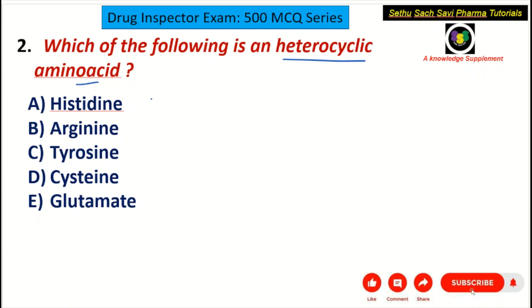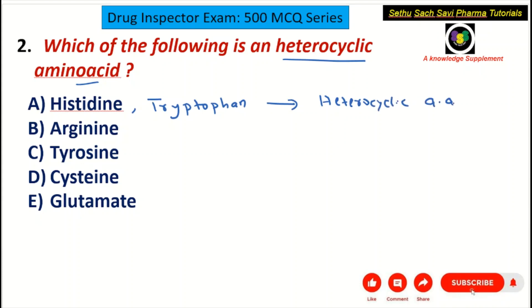The answer to this question is histidine. Histidine is a heterocyclic amino acid. Apart from histidine, tryptophan is also a heterocyclic amino acid. So histidine and tryptophan belong to the heterocyclic amino acid category. They are called heterocyclic amino acids because they contain heterocyclic rings.